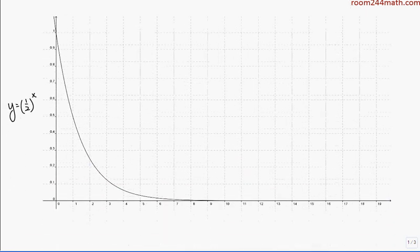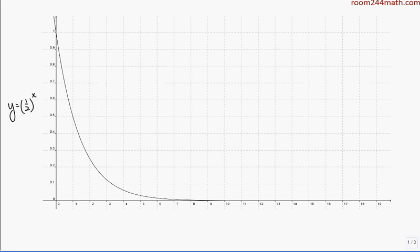Let's take a look at a common ratio less than 1. So I've picked a half. Again, the first term is going to correspond to an x value of 1, and that's going to be right there, a half.